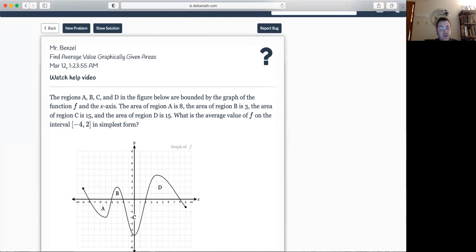All right, so for this one, we are going from, we got A, B, C, and D. The function is bounded. Our region A is 8, and since that is below, that's going to be a negative 8. Our B is a plus 3, our C is a minus 15, and then our D is a positive 15. And we have to actually find the average value in the interval negative 4 to 2. I even like to kind of call this my A and my B.